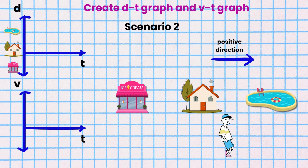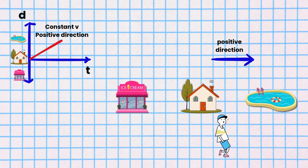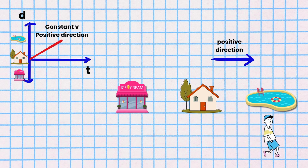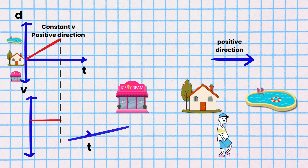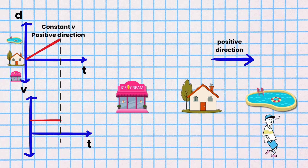Scenario 2. Isaac is walking from his home to the city swimming pool at a constant velocity. The DT graph is a straight line with a positive slope since he is moving in the positive direction. The VT graph would be a horizontal line at the appropriate velocity value in the positive quadrant above the time axis.